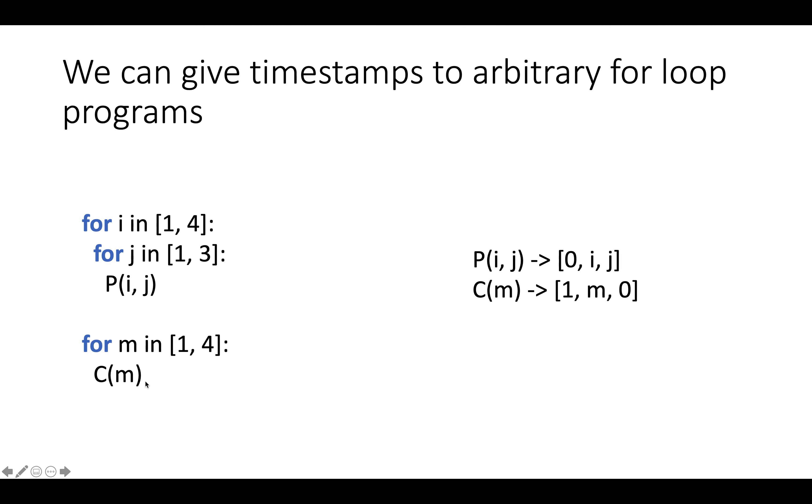Then we can say that statement p(i,j) happens at time [0, i, j], and c(m) happens at time [1, m, 0], where this 0 is just kind of a padding factor to make sure that the output spaces all have the same dimension, and then these constant values in the schedules correspond to the position in the program text, and then these other dimensions correspond to positions inside of inner loop nests.